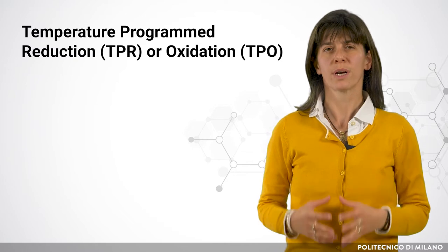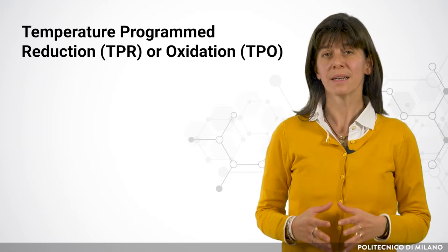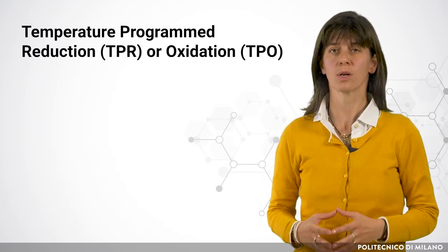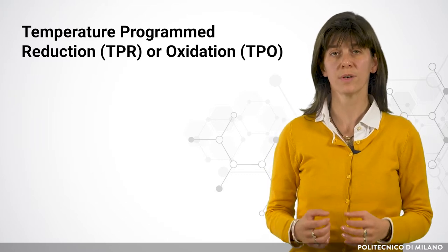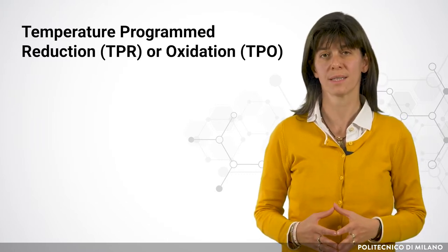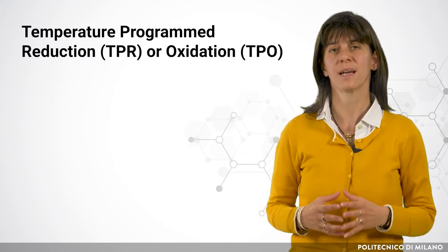I present to you two characterization techniques often used in catalysis studies. The first is temperature programmed reduction or oxidation (TPR/TPO), which are material characterization processes commonly used in catalysis to study the surface chemistry of metals or metal oxides under varying thermal conditions.